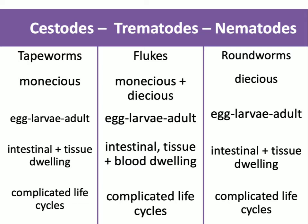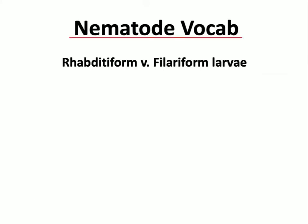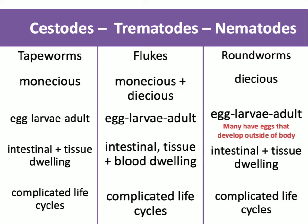There are many nematodes whose eggs actually have to be in the environment and sit there in order to mature. We've seen a little bit of that when an unembryonated egg is passed and then it embryonates, particularly with the flukes. But this is a new thing where there's really an environmental incubation required for progression through the life cycle.